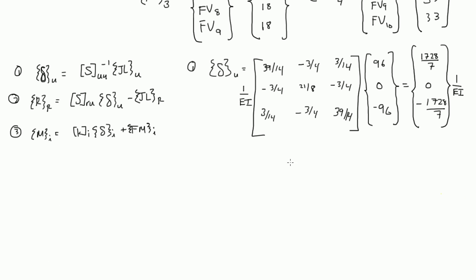Those are the unrestrained deformations happening at degrees of freedom 1, 2, and 3. That's equation 1 — we need our joint load unrestrained column vector and our S sub UU inverse matrix. In the next video, we're going to look at our restrained reactions and figure out what the values are for those. Alright, see you then.